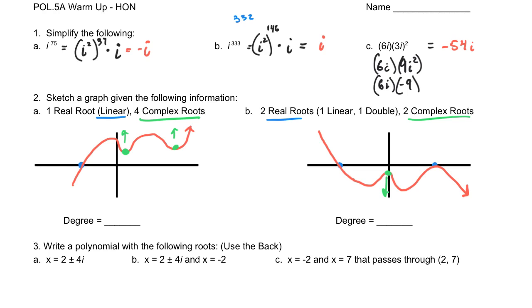so that means my degree is going to be equal to 5, and then for the other one, it's actually kind of the same here. We have a linear root, we have a double root, so that's 1 in this spot, and then you're going to have 2 at the double root, and then also 2 at the complex root, so that's also a degree of 5.